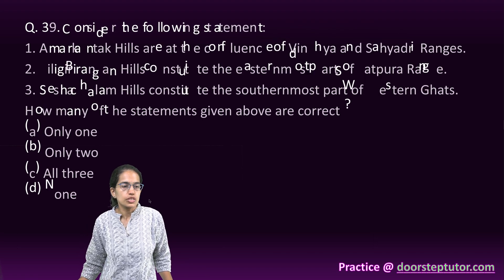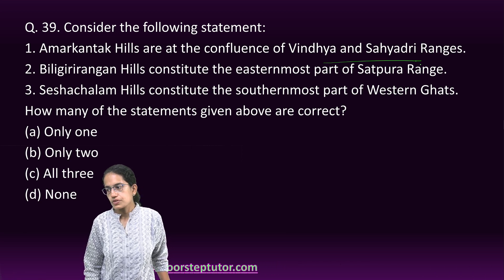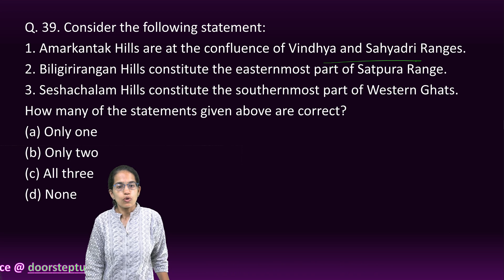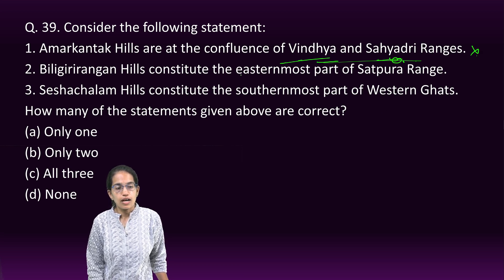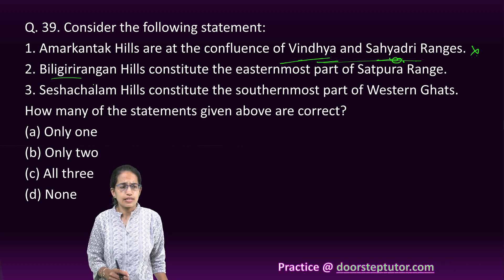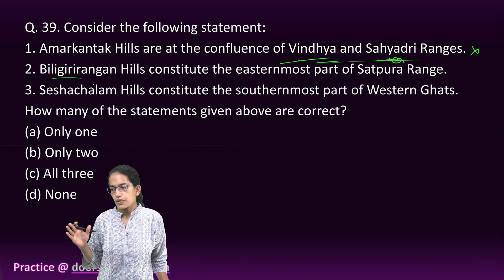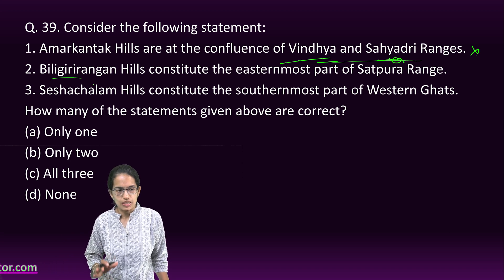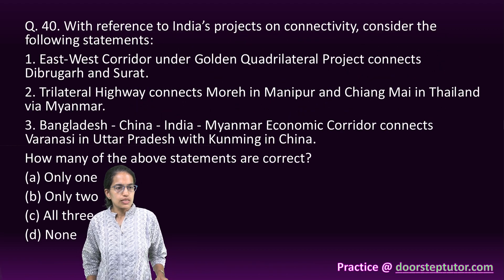On the hill ranges question: Amarkantak is at the confluence of the Vindhya and Satpura ranges — but the statement as given is incorrect. Biligiri Rangan Hills are situated in parts of the Satpura range — also placed incorrectly in the question. Seshachalam Hills are located in the Eastern Ghats, not the Western Ghats. All three statements are incorrect, so none of them is correct.